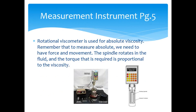For measuring absolute or dynamic viscosity, we use the rotational viscometer. To measure absolute viscosity we need force and movement, so the rotational viscometer has a spindle that rotates in the fluid, and the torque required to keep that spindle turning is proportional to the viscosity of that fluid.